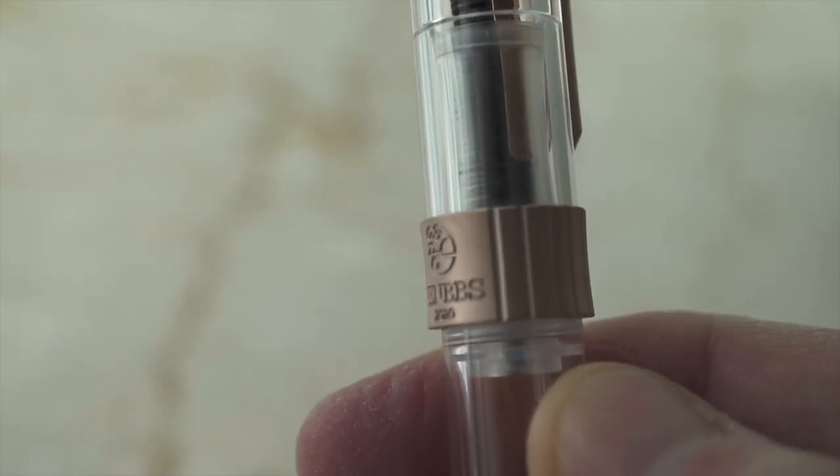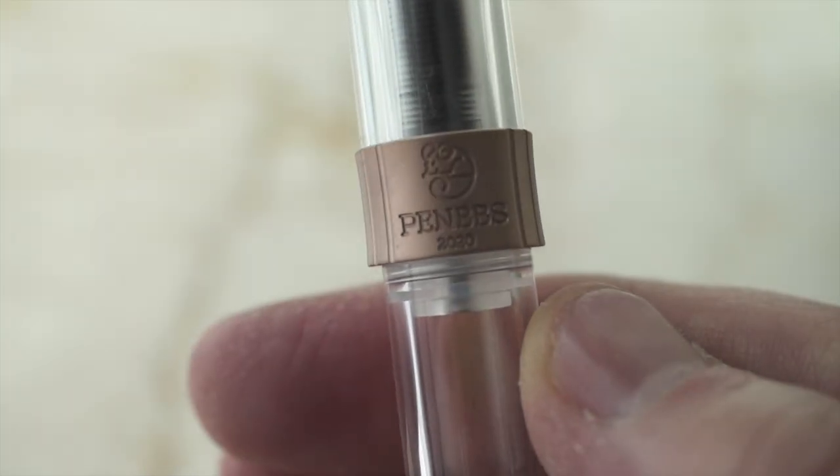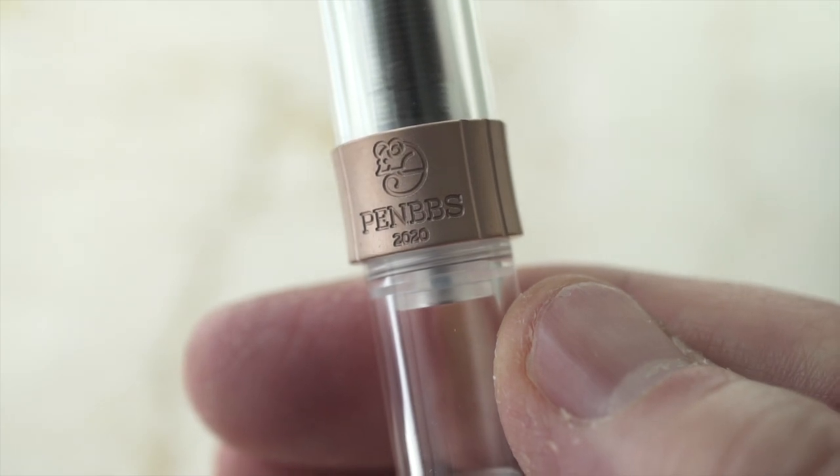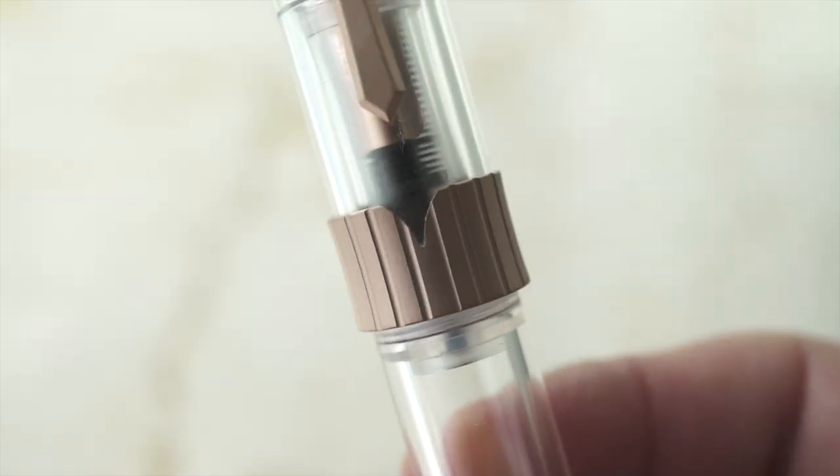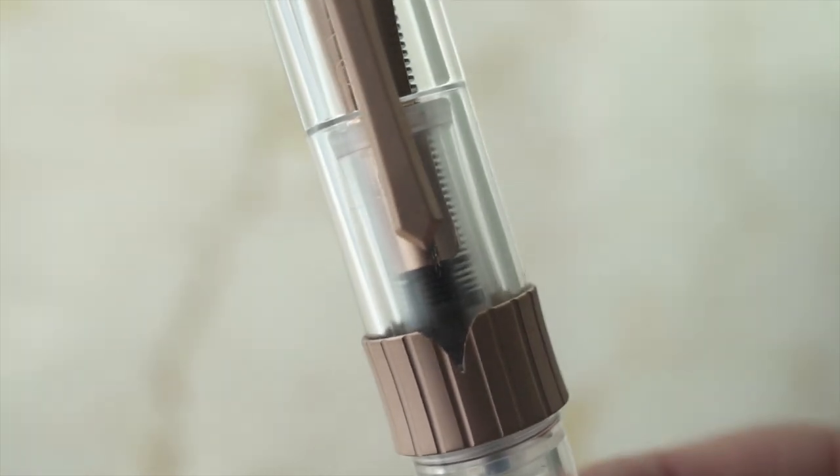The center band is ribbed and has a picture of a rat. The words PenBBS and 2020 on the back. And the clip lines up with a little divot on the center band.